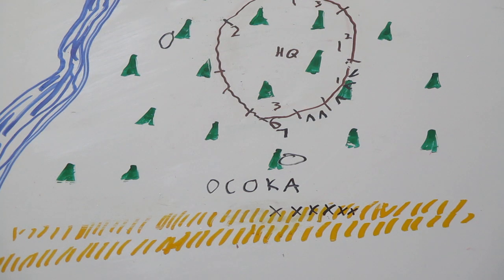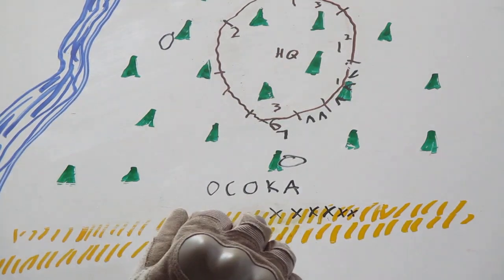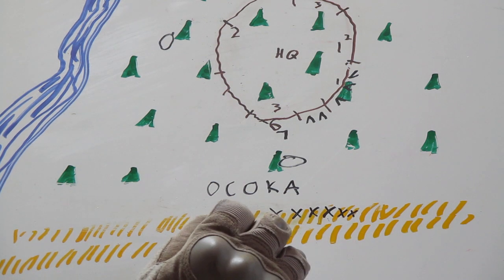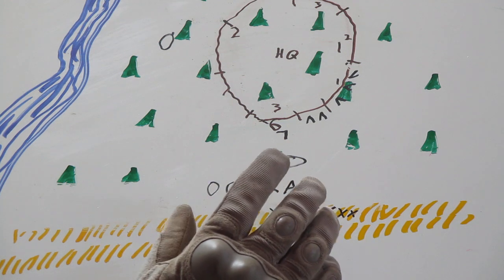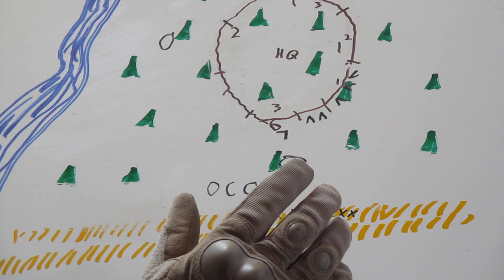While the security patrol is going on, you will be emplacing any claymores that you have that you determine need to go out. You'll be putting out your trip flares. You will also be putting out any IEDs if you determine you need to put one in because there's a high speed avenue of approach.